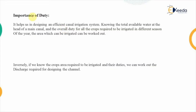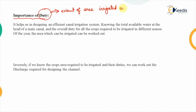The first thing we are going to study is the importance of duty. Defining duty one more time: it is the extent of the area that can be irrigated under one cumec of water. That means if we supply one cumec of water, how much area can be irrigated.